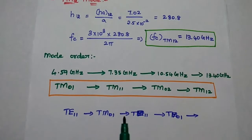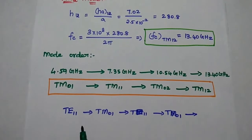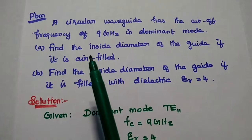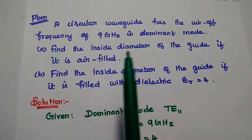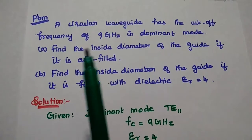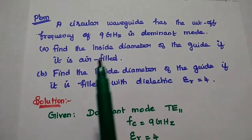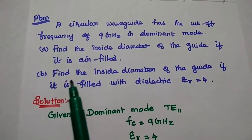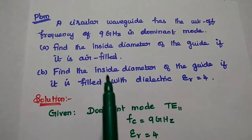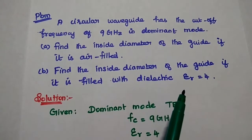So for this circular waveguide including TE and TM waves, the dominant mode is TE11. The next one is TM01 mode. Problem: A circular waveguide has a cutoff frequency of 9 GHz in the dominant mode. We are going to find out the inside diameter of the guide if it is air filled, and also if it is filled with a dielectric material with εr = 4.